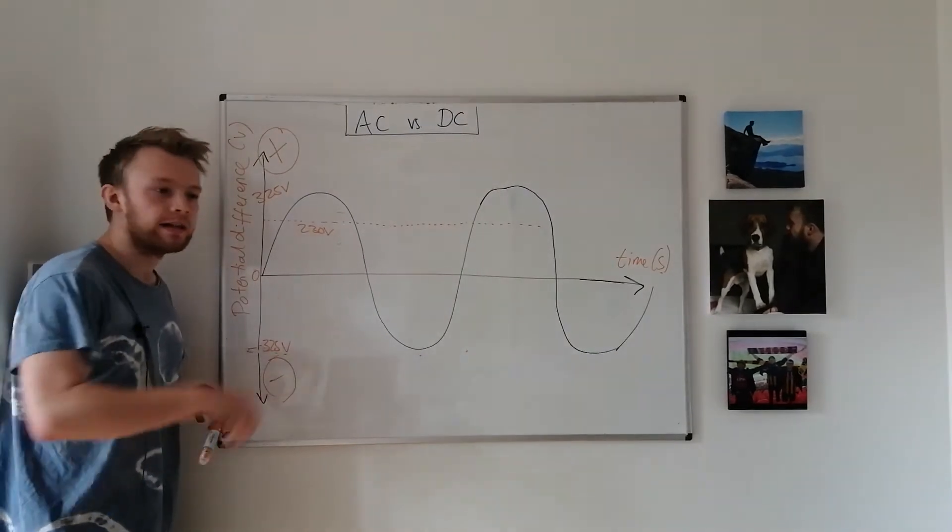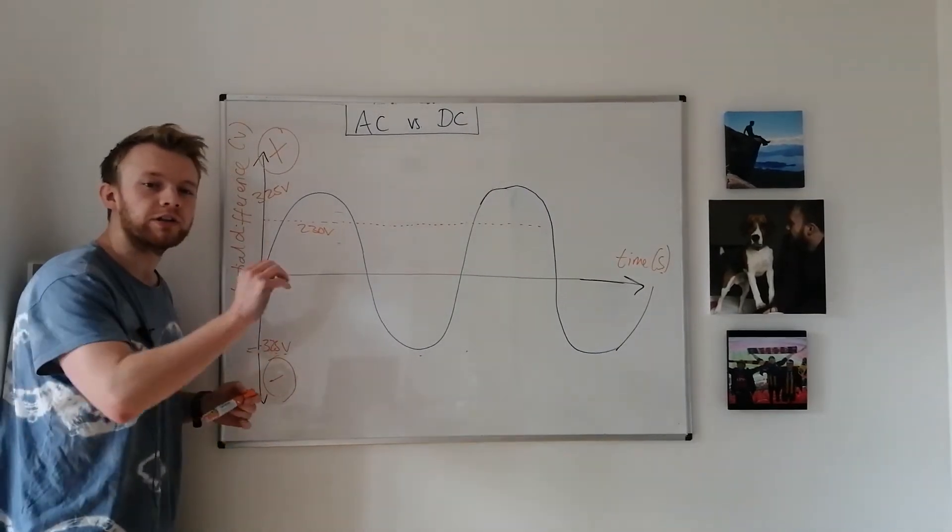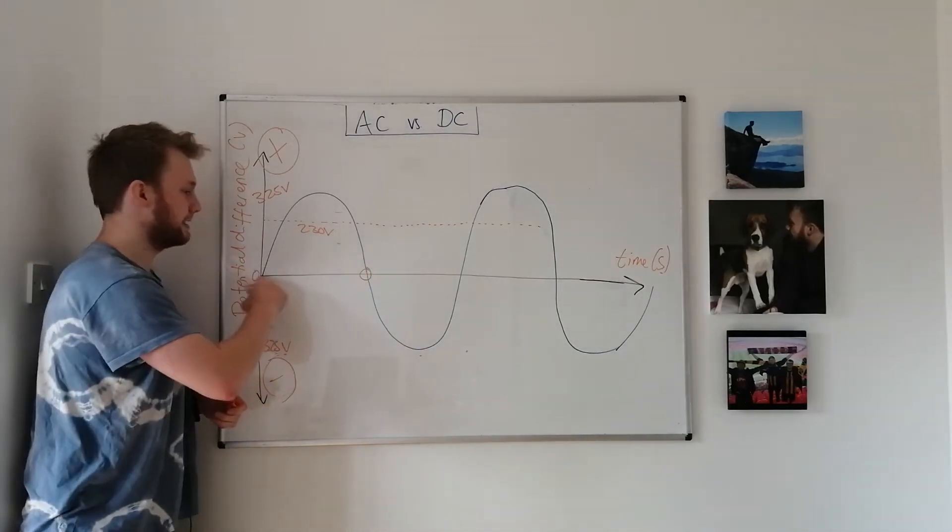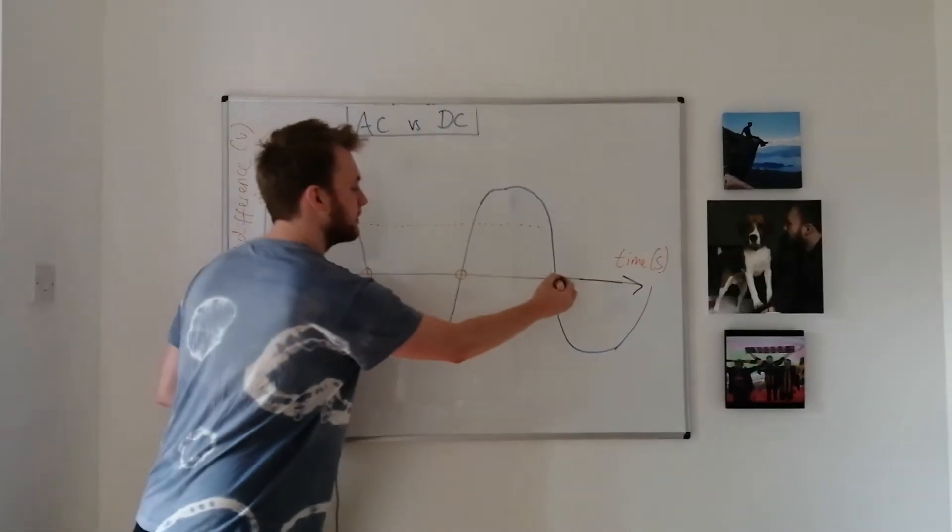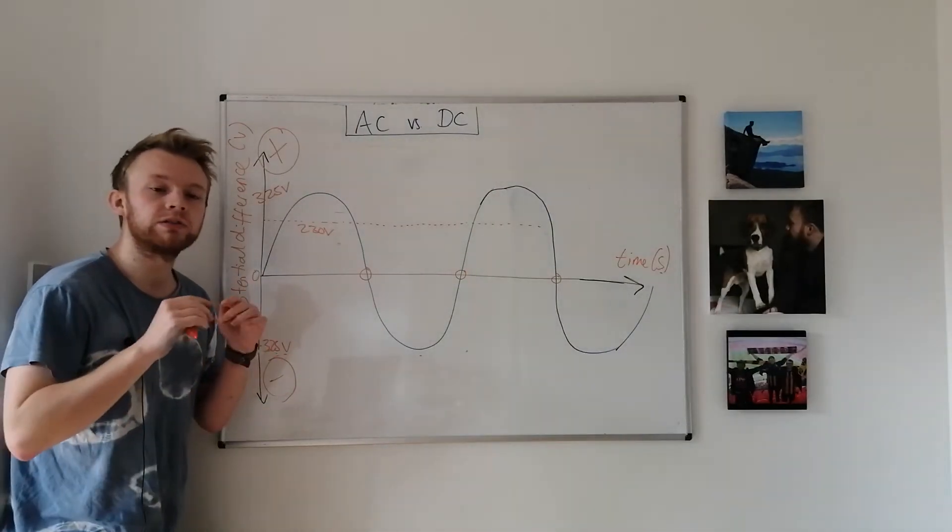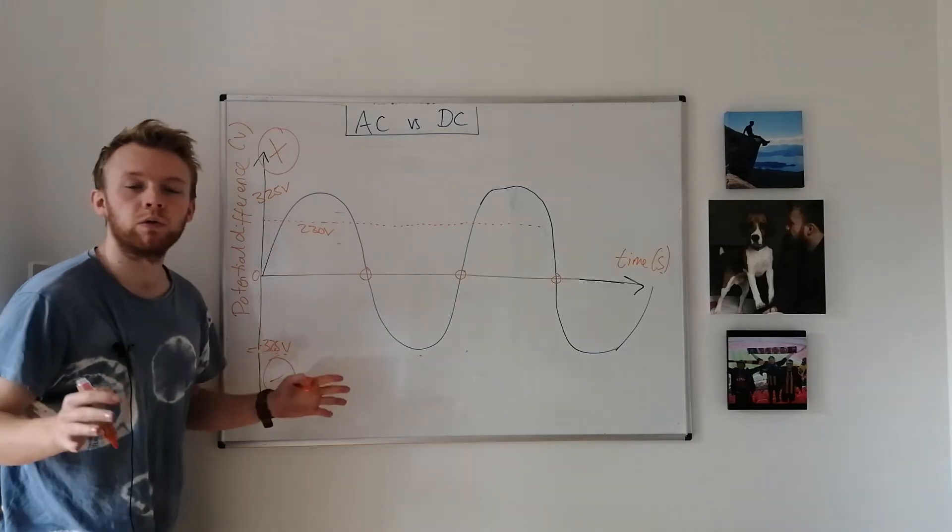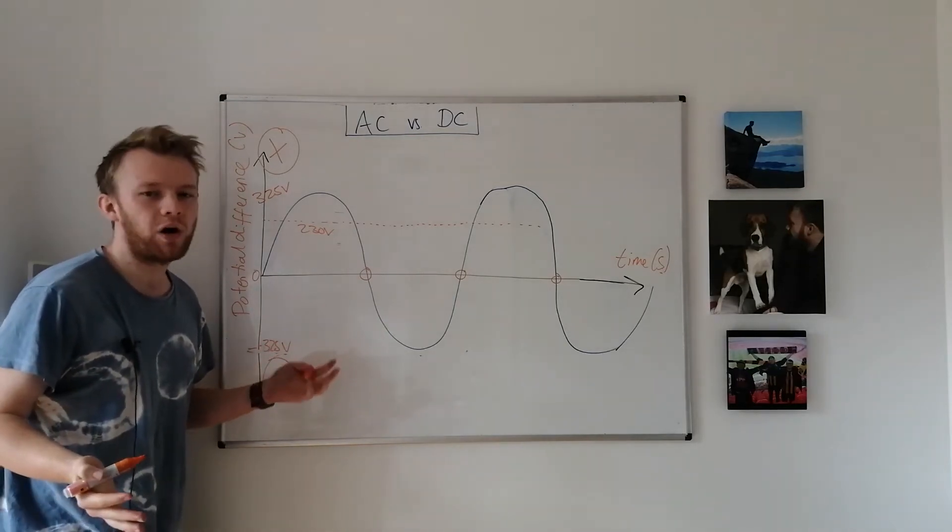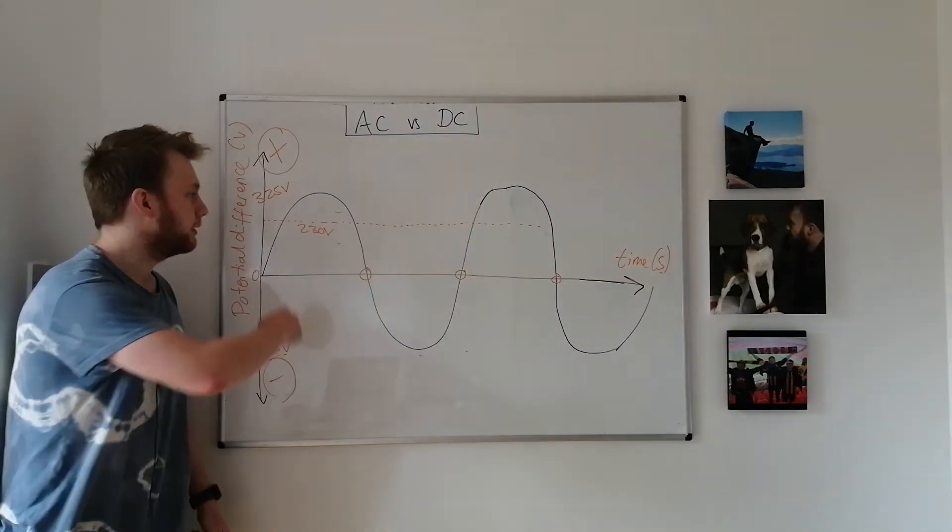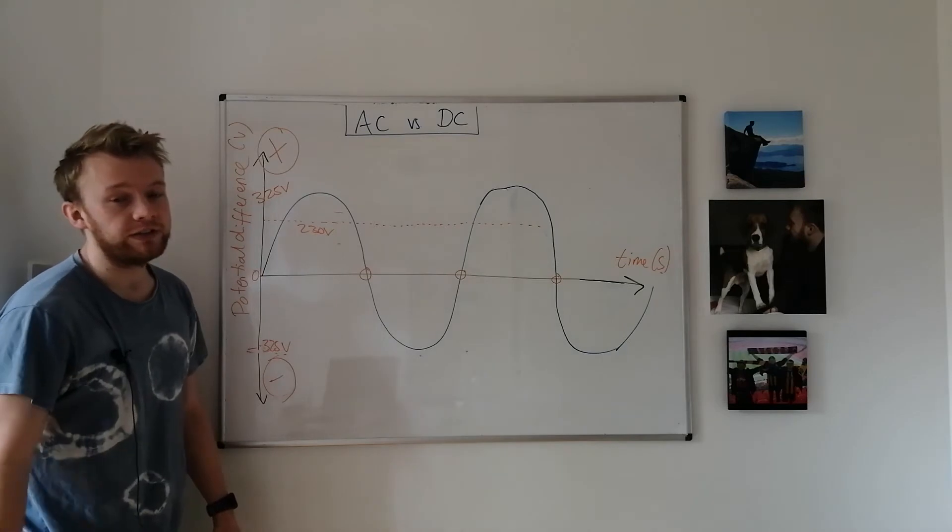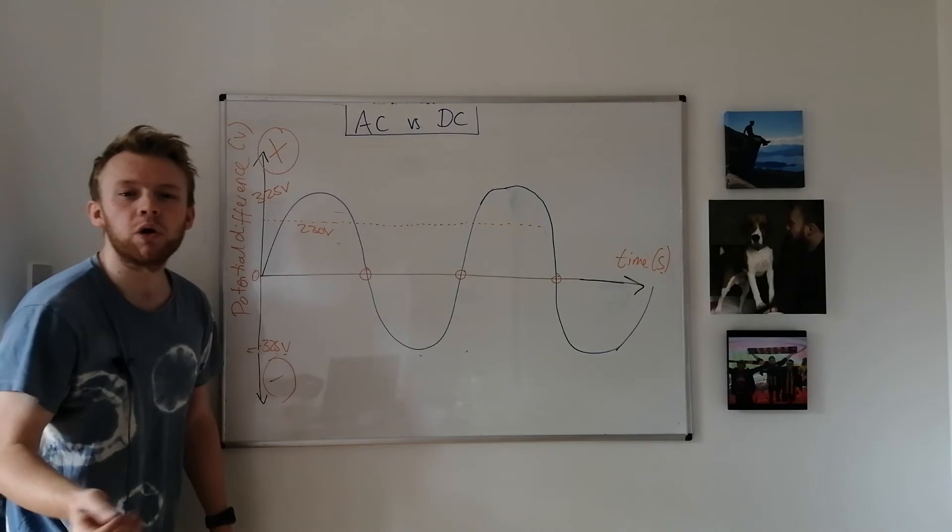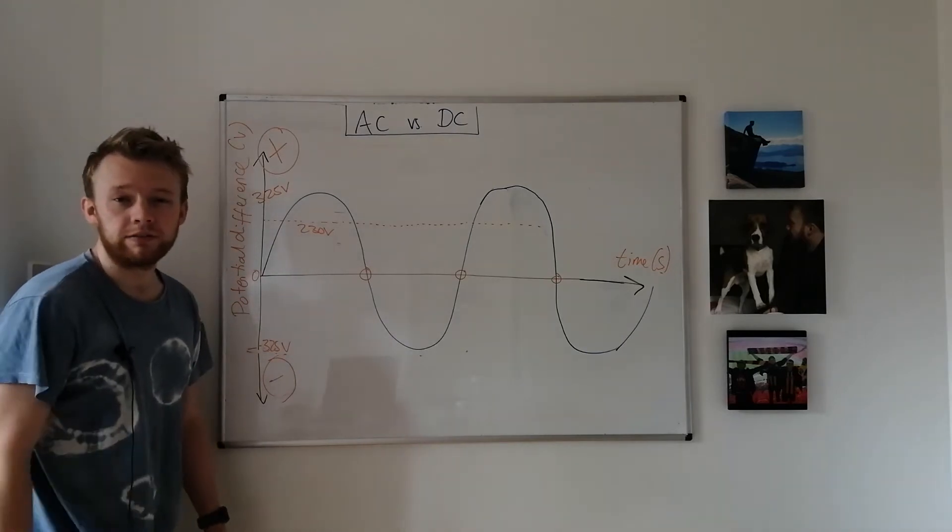Now you may have already spotted that with alternating current there are actually times here where the potential difference or voltage moves through zero as it goes from positive to negative and negative to positive. So there are actually three times when there is no current flow at all and the circuit is effectively off. But bear in mind the current goes through one full cycle from positive to negative 50 times every second. That means that it happens so quickly that we don't even notice.